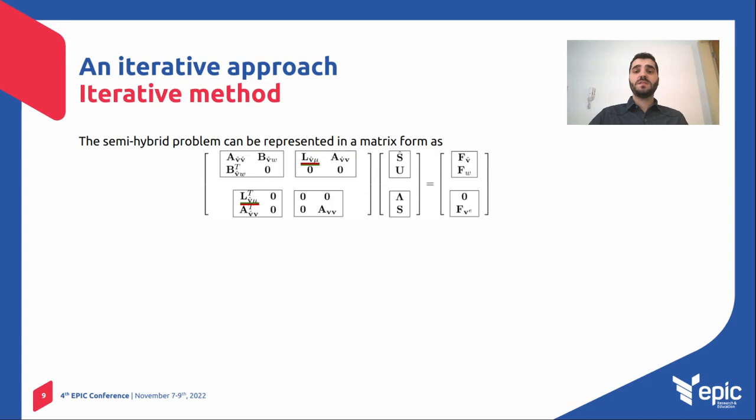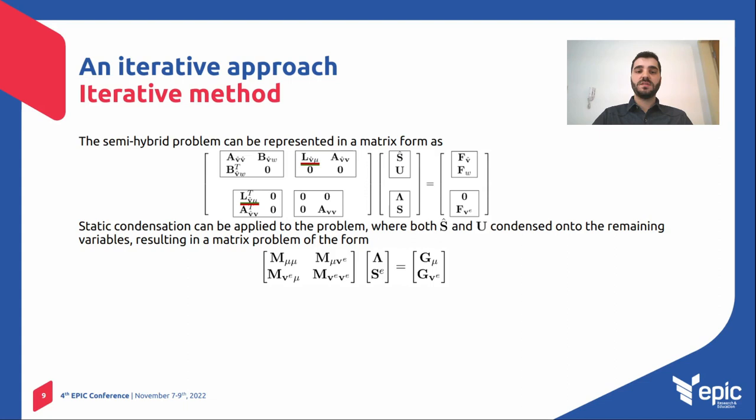And now what we do is to work with this formulation here, and apply static condensation to this formulation, to both the constant normal flux and the pressure variable, condensing to the Lagrangian multiplier and the divergence-free functions. When we do that, our problem becomes this one here, given by a block two-by-two matrix. And this is the real problem we are going to solve iteratively.